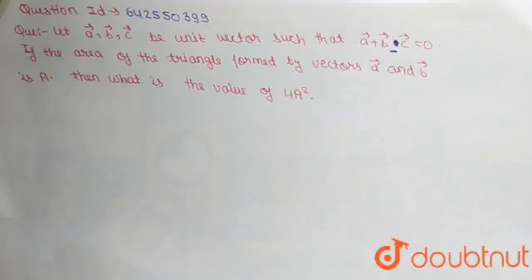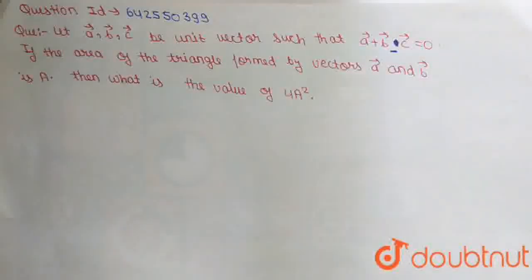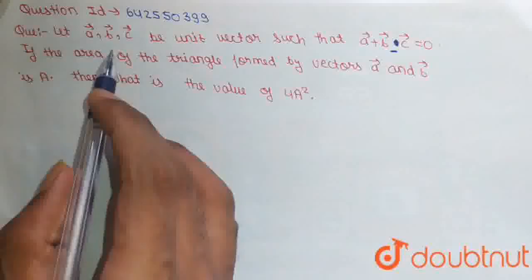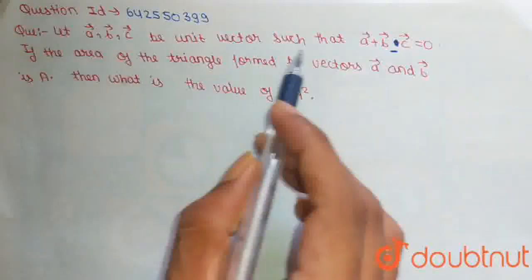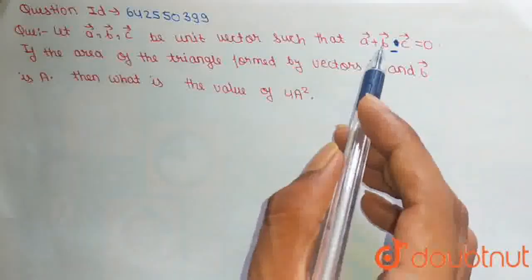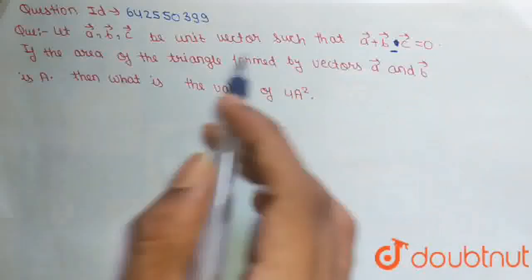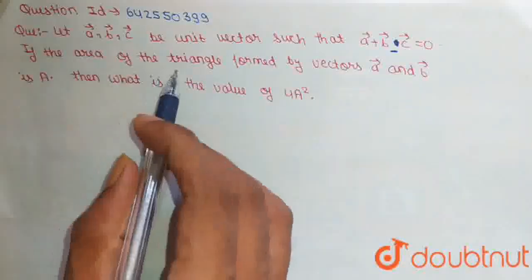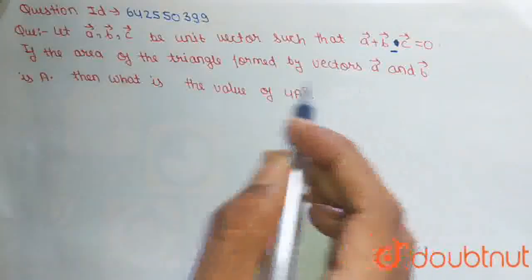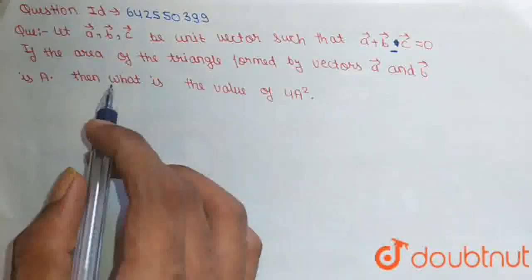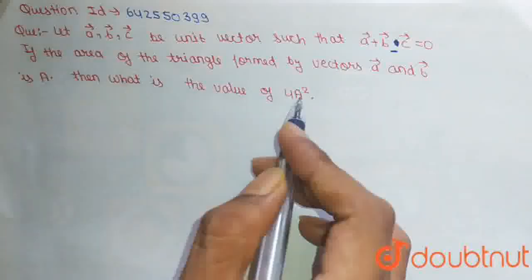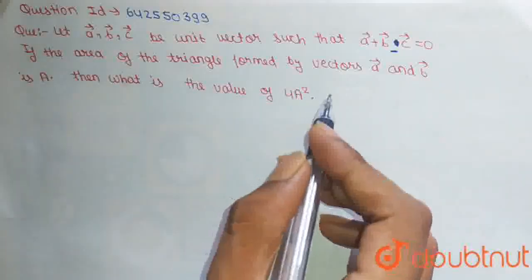Hello friends, our question is on vectors. The question says: let A, B and C be unit vectors such that A vector plus B vector minus C vector is equal to 0. If the area of the triangle formed by vector A and B is A, then we have to find the value of 4A square.